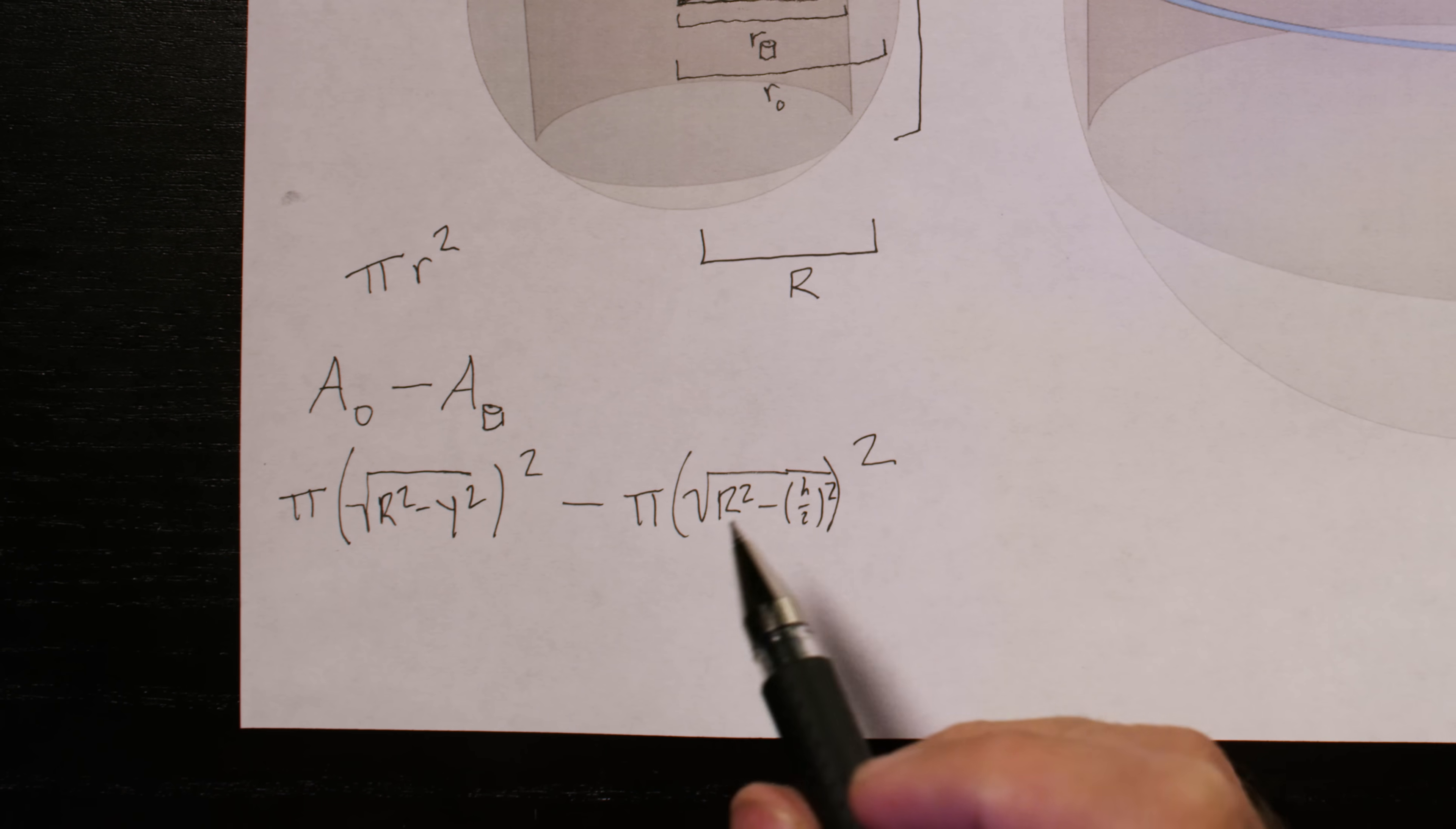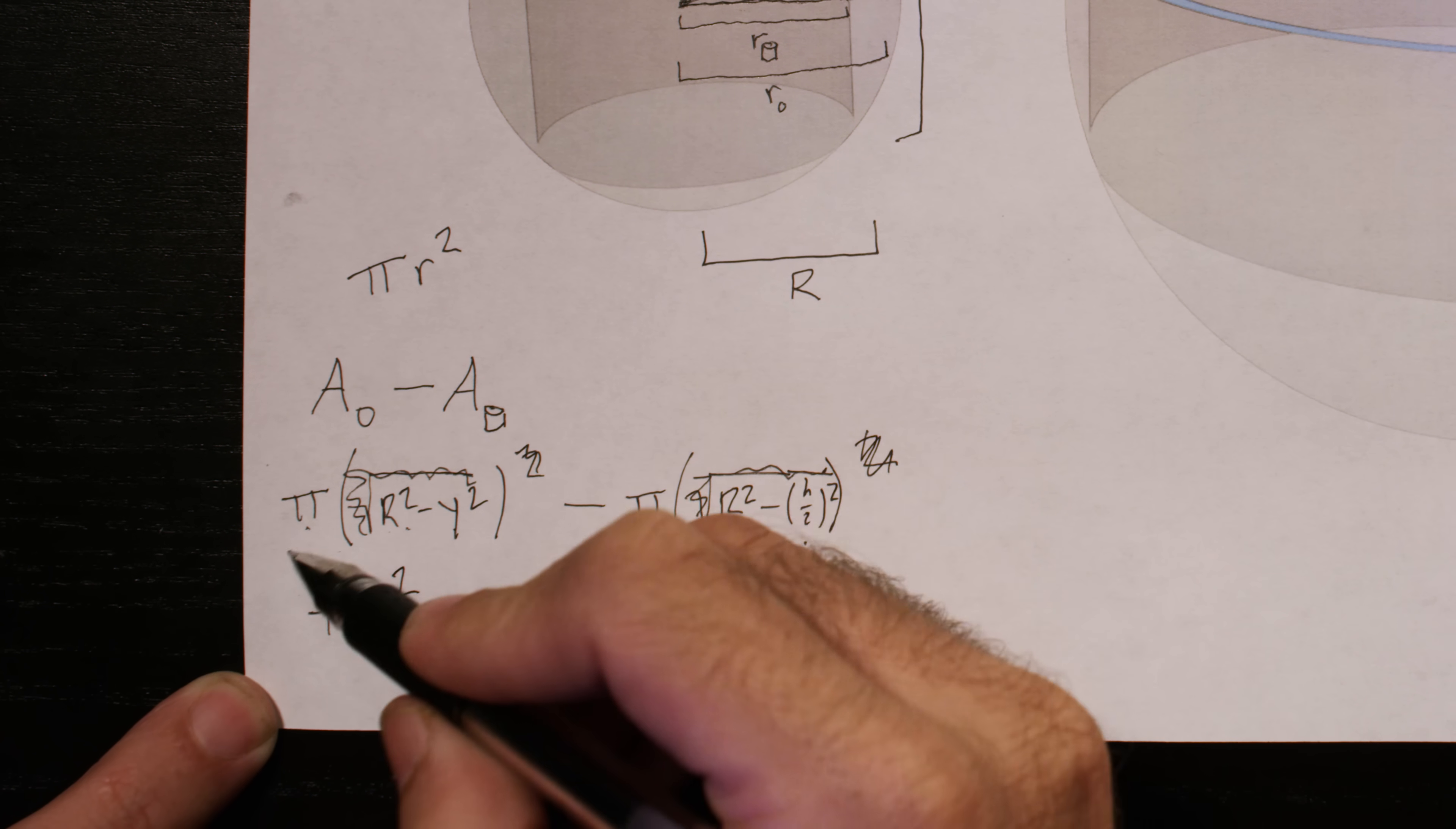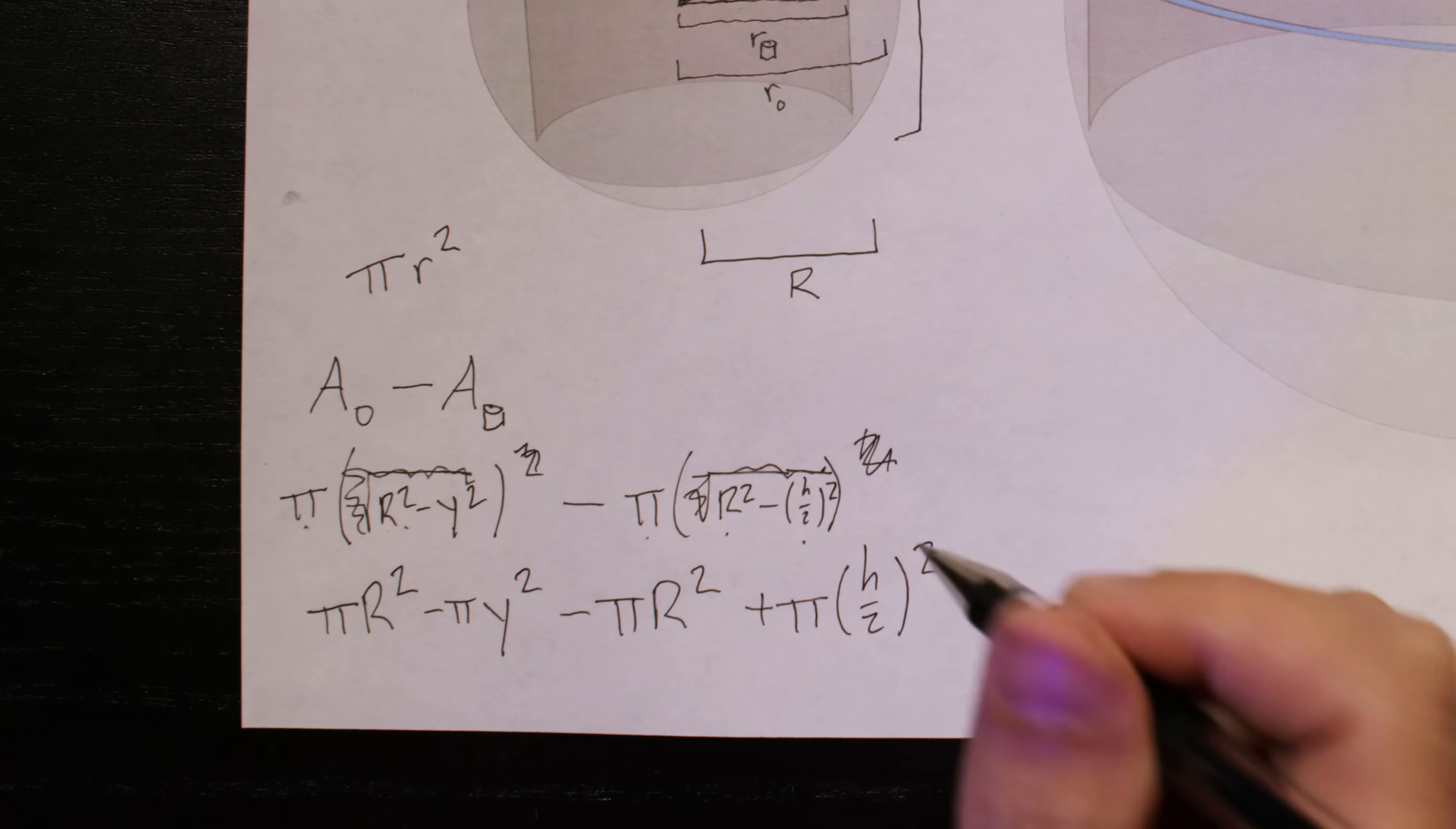Now, what you might notice is that we're taking the square root of something and then squaring it. So these actually cancel each other out. Perfect. Much more simple looking. But now let's distribute pi to the terms inside the parentheses. So pi times R squared gives us pi R squared. Pi times negative Y squared gives us negative pi Y squared. Then a negative pi times R squared is negative pi R squared. Negative pi times negative H over 2 squared is positive pi H over 2 squared. Great.